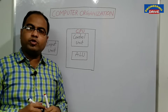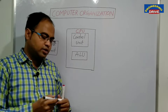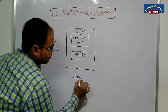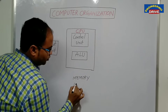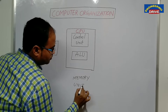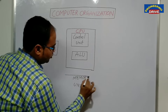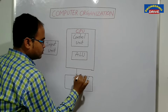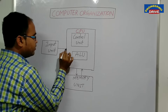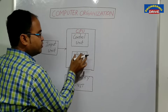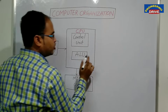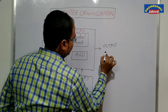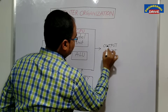Only CPU won't do the work in a computer. Along with CPU, in order to do multiple tasks, we need one more component — that component is known as the memory unit. From the input unit, data will be given to the CPU — the control unit and ALU — they will perform some calculations and processing, and then data will be given to the output unit.